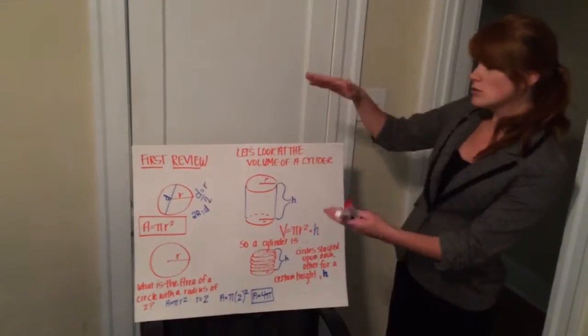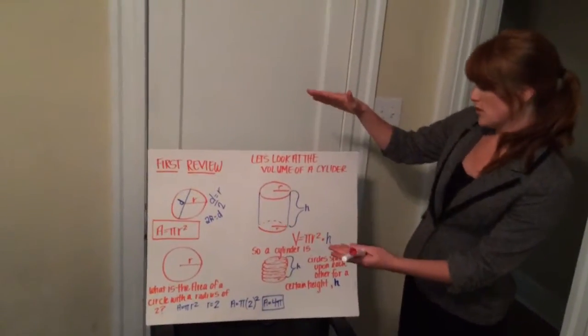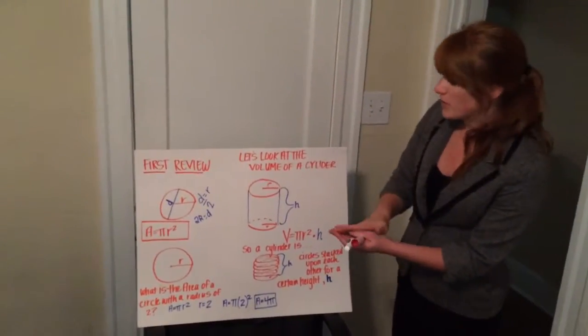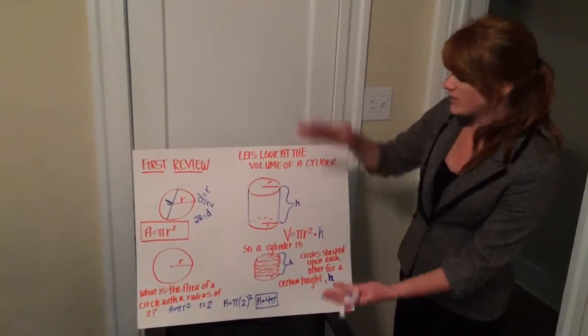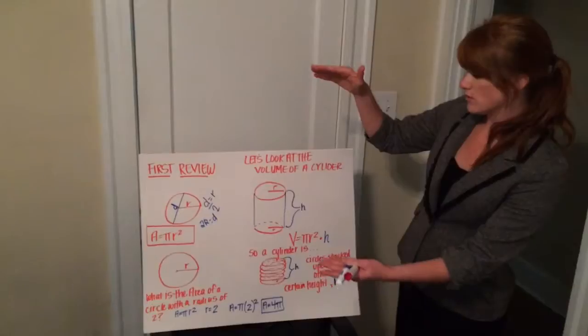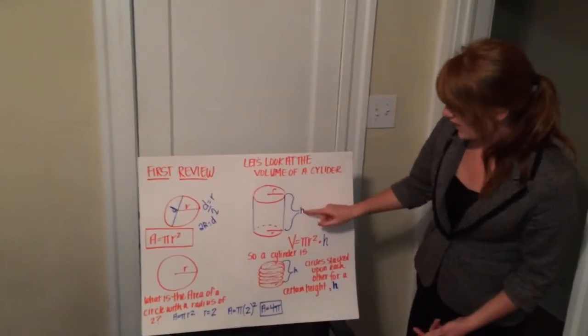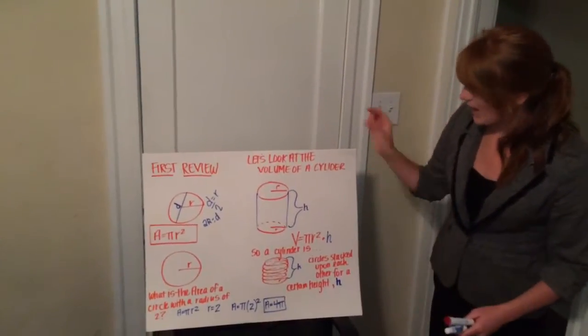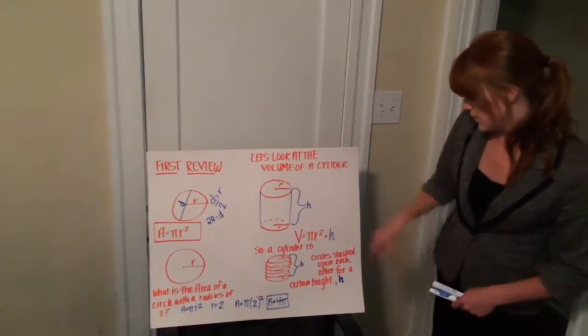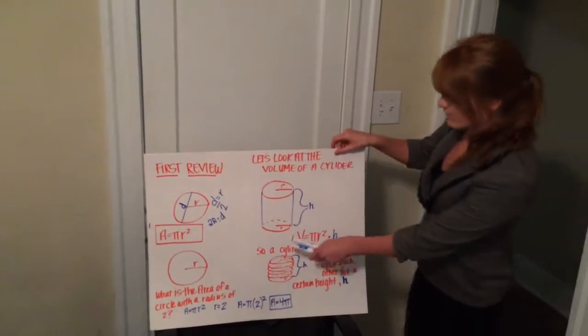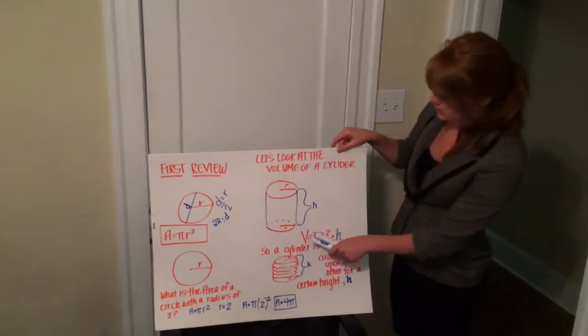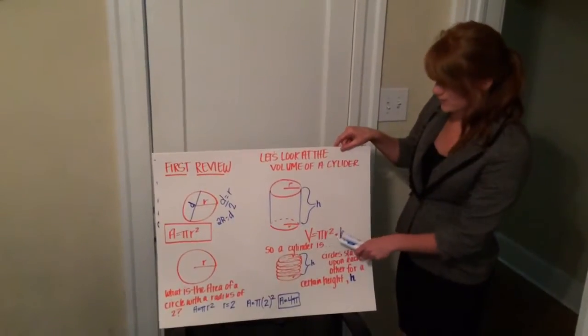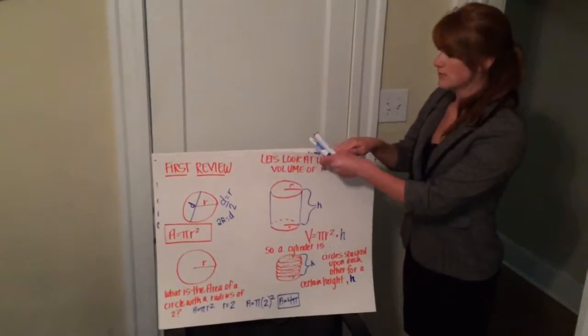So we have pretty much an infinite number of circles stacked for that height. Our volume is equal to pi r squared times our height.